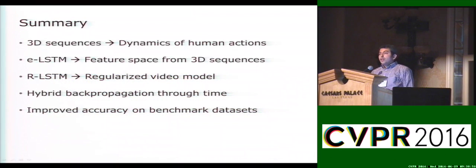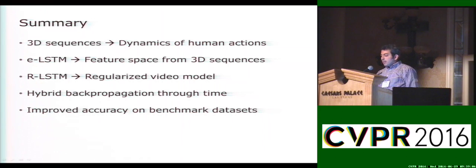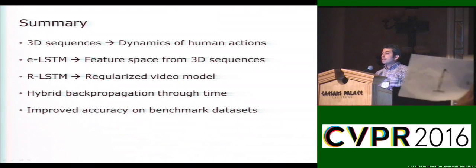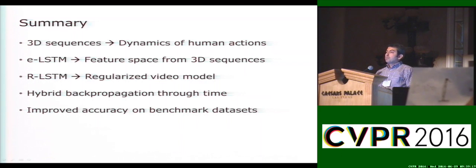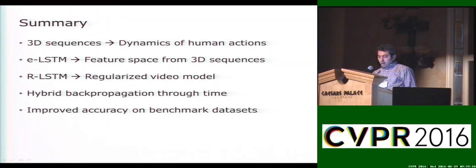To summarize, we used 3D sequence data to represent the dynamics of human actions, using an LSTM to generate a semantic feature space from 3D sequences. The resulting sequence model is used to regularize a video model. We introduced hybrid backpropagation through time based on the hybrid gradient descent method, and showed that complementary 3D data can help improve accuracy. For more details on the network parameters and training procedure, please visit our poster at the poster session. Thank you.